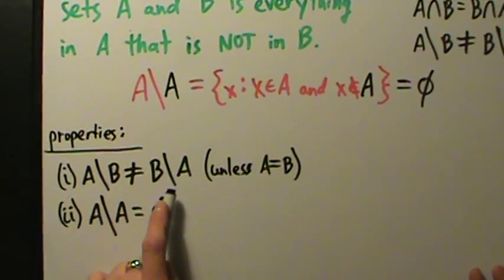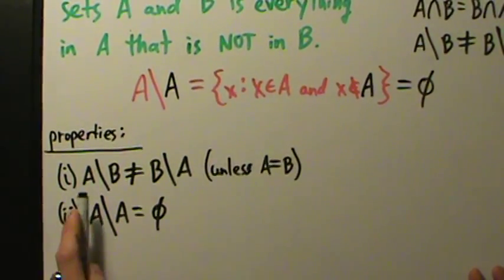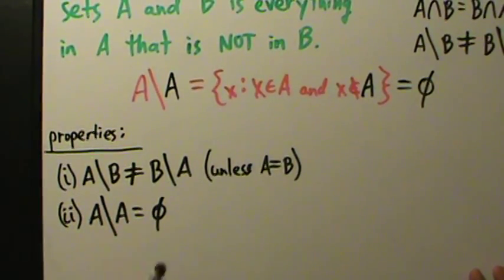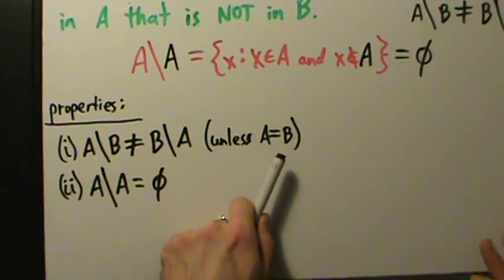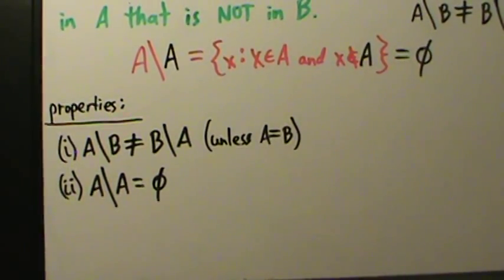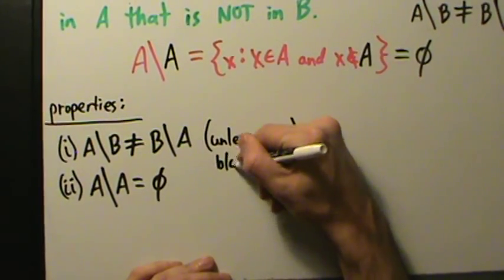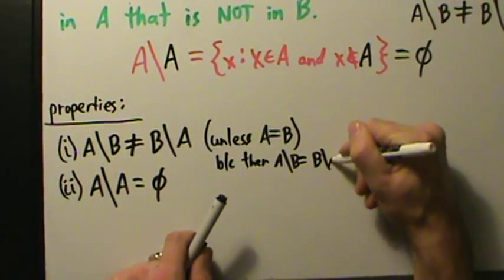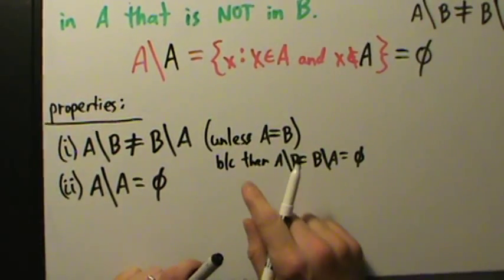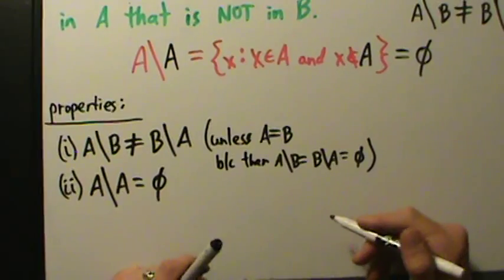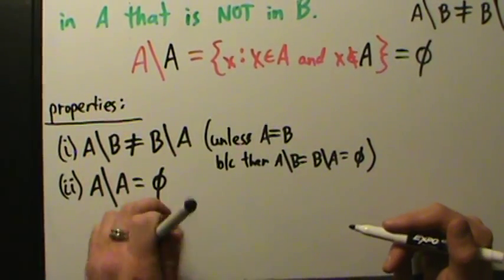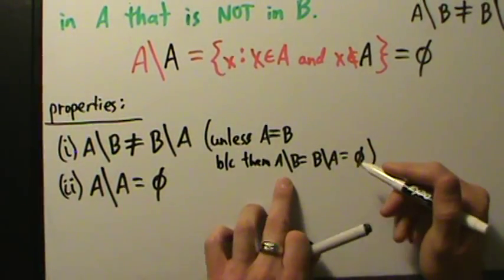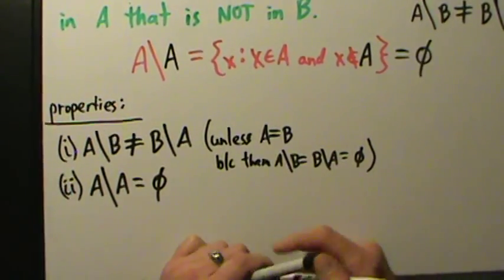So A without A is the empty set, and that's why A without B is not equal to B without A unless A equals B — because then you're doing a set without itself both ways and you just get the empty set back. Unless A equals B, because then A without B equals B without A equals the empty set.